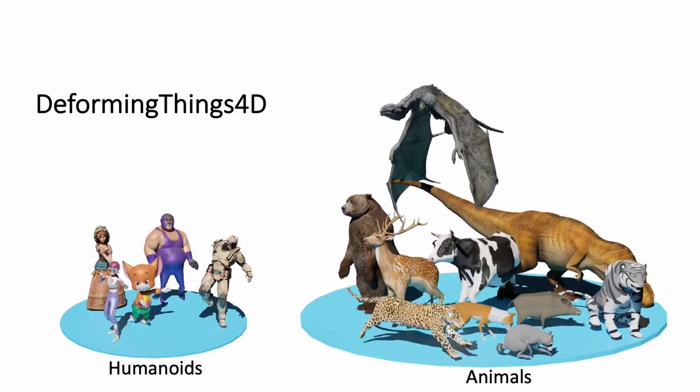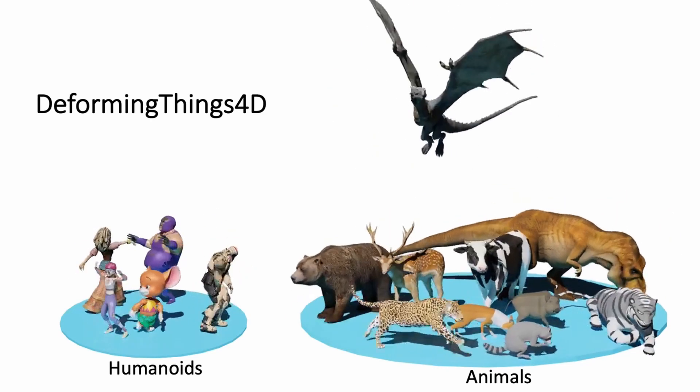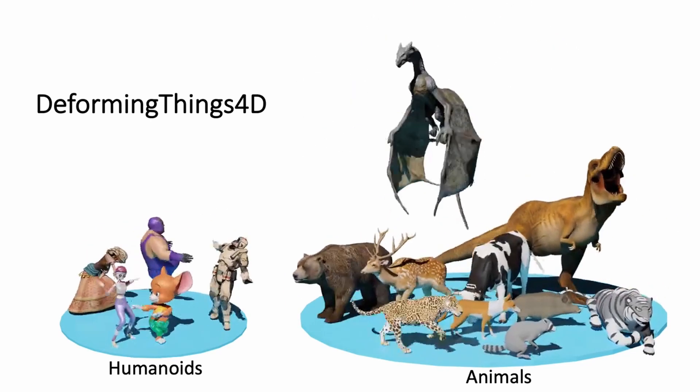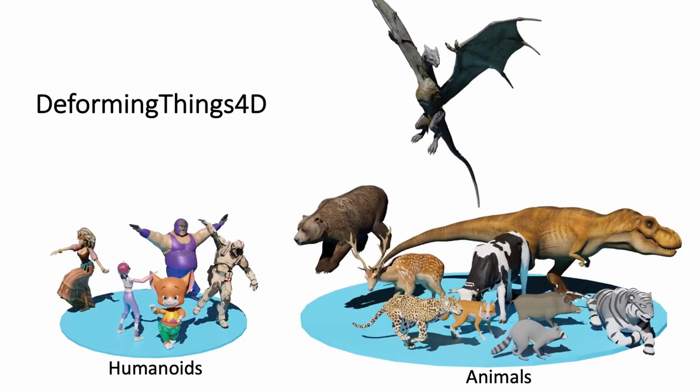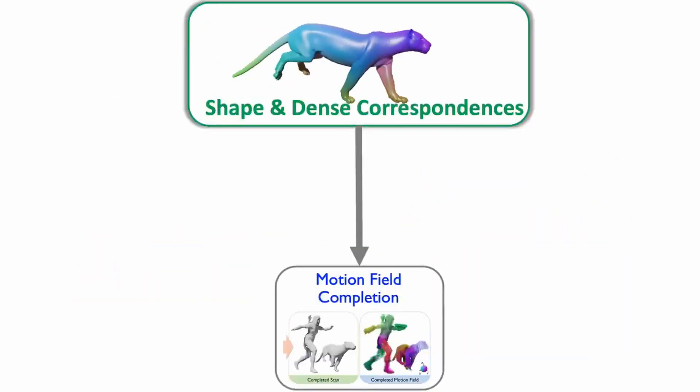To train our network, we propose a large-scale synthetic dataset called Deforming Things 4D. Here, we show some examples. This dataset provides complete shapes and dense correspondences for training our 4D-complete networks.